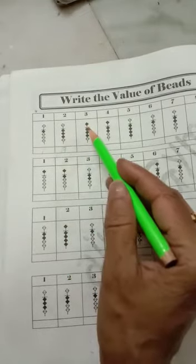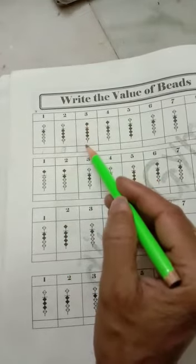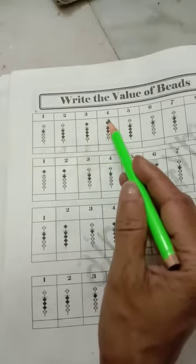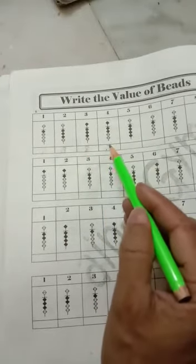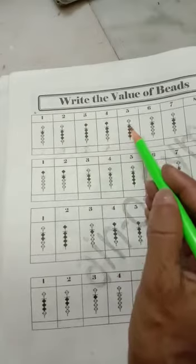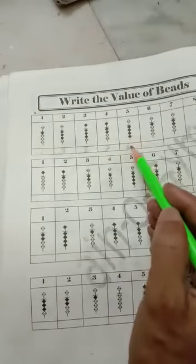Upper bead is 5, 6, 7, 8, that means 8. Upper bead is 5, 6, 7, that means 7. 1, 2, 3, 4, that means 4.